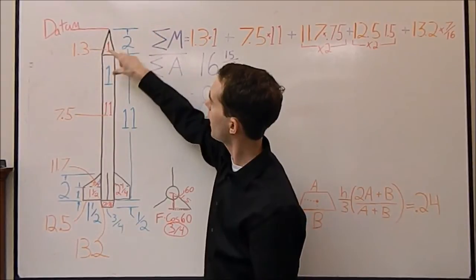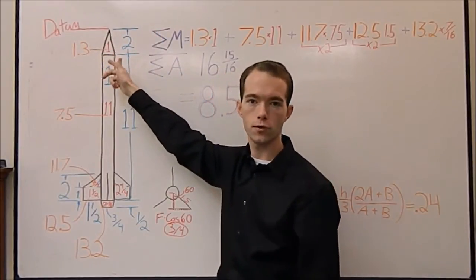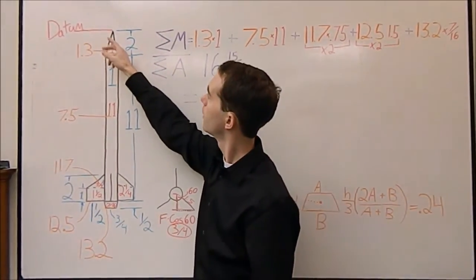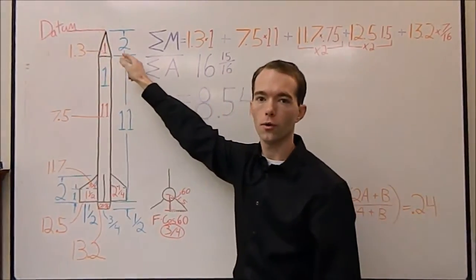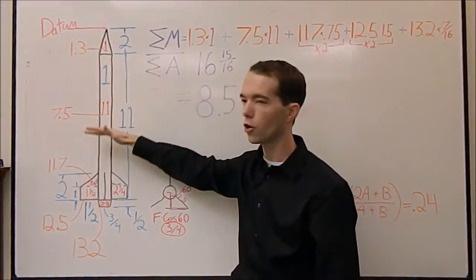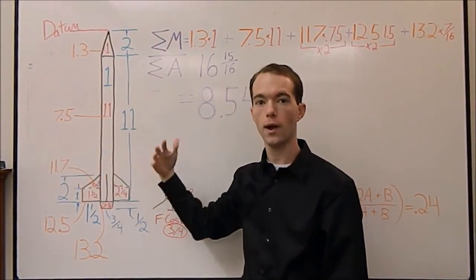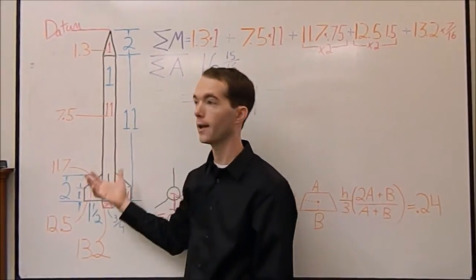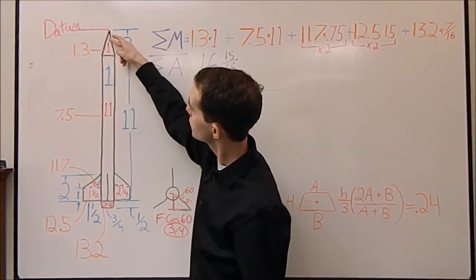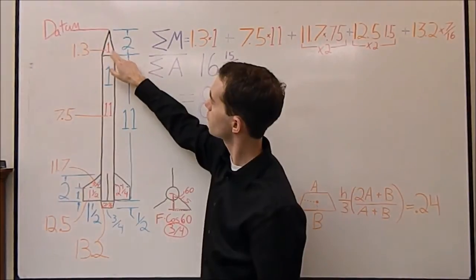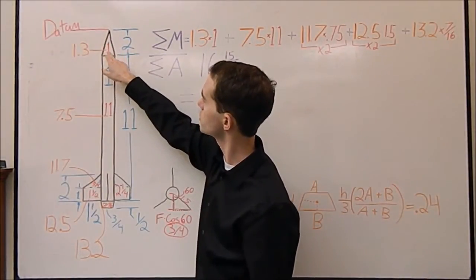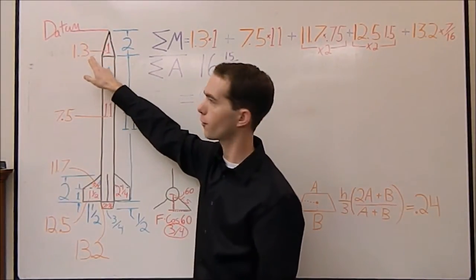Well, it's 2 high, so 1/3 of 2 is 2/3. But we're measuring from the nose cone. You pick a distance and you measure all your distances from there, so that you have consistency and that the math works out right. So in our case, we need to subtract 2/3 from here. So our centroid distance for our triangle is 1.3, 1 and a third.